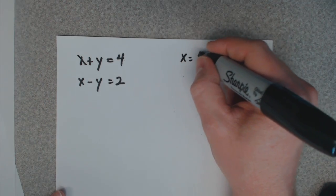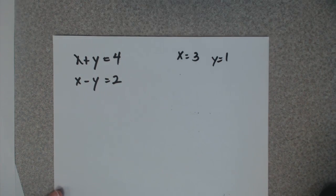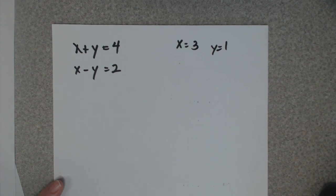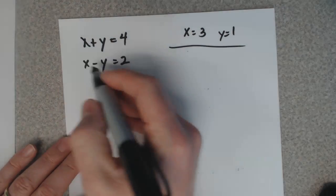I'm going to start with the answer. Three plus one is four and three minus one is two, so that's the answer we want to try to get out of this. So I'm assuming you can put this into a matrix equation form.